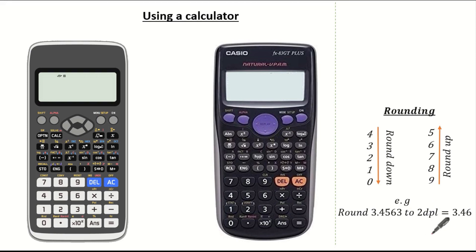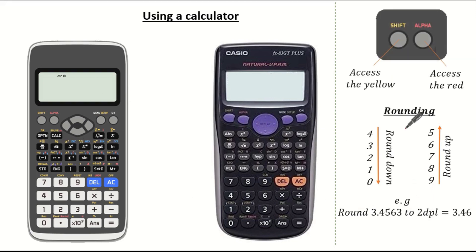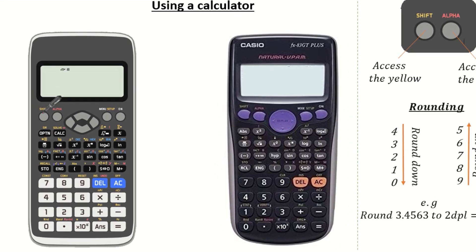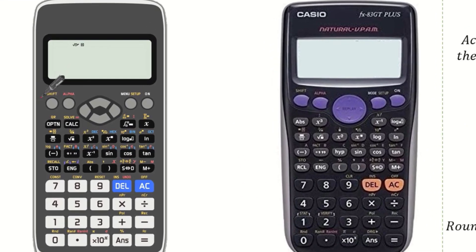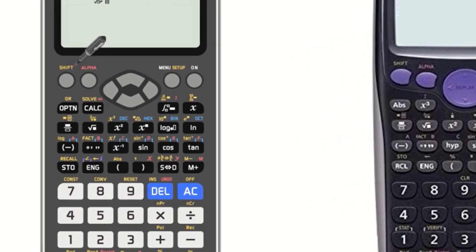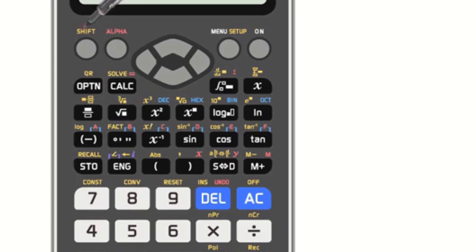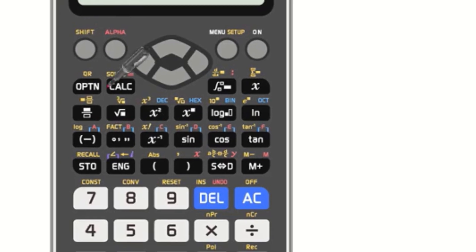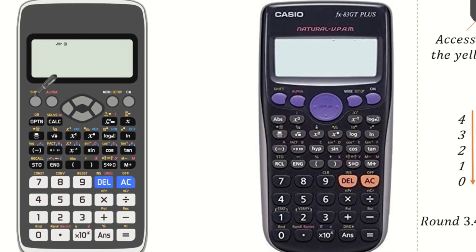Now let's have a look at how we can access the general functions of any scientific calculator. What you have to remember is anything above the button which is in yellow is accessed using the shift button, and that is why the shift button is colour coded yellow — because it's telling you anything that is yellow must be accessed using the shift button.